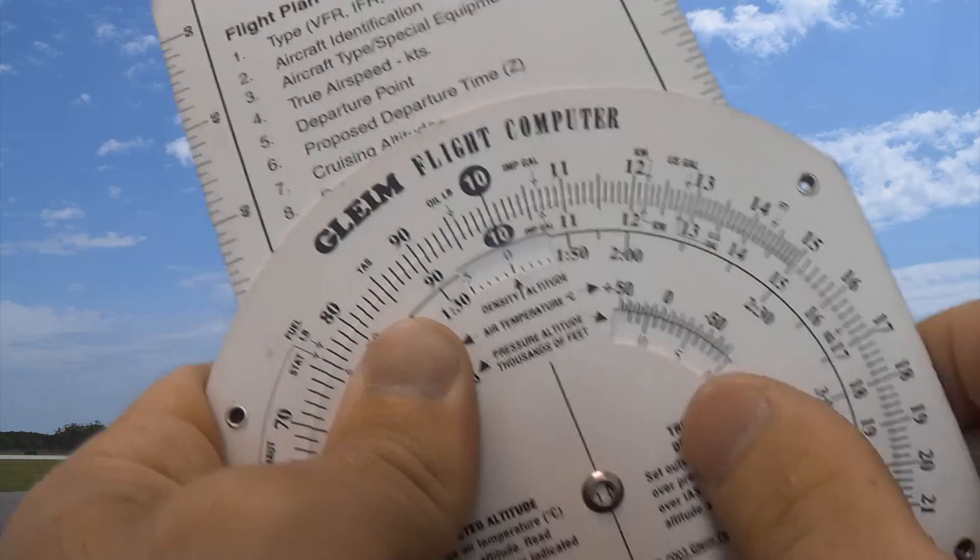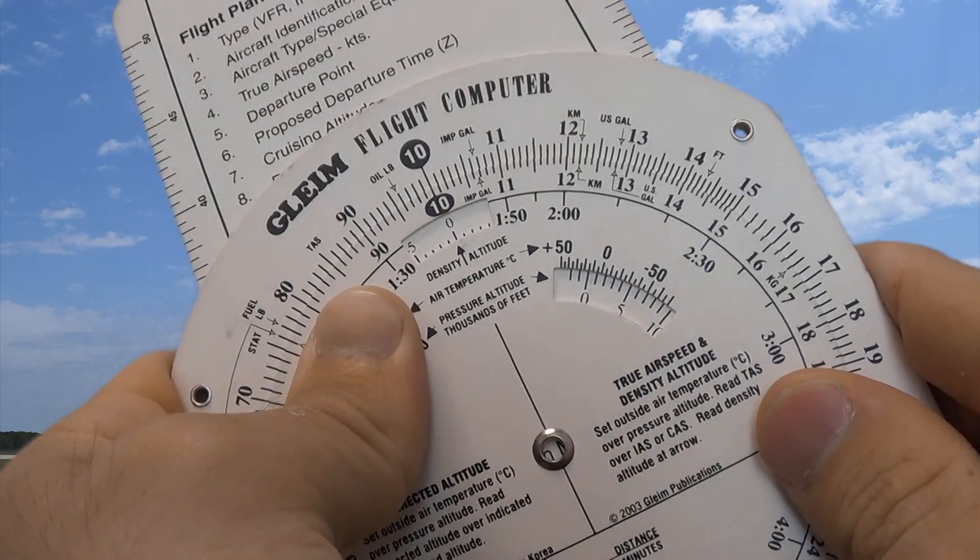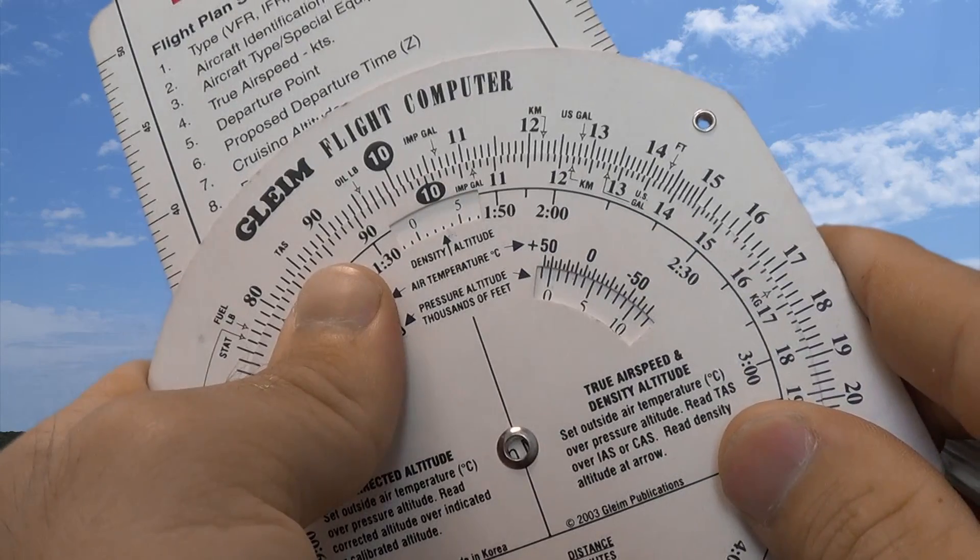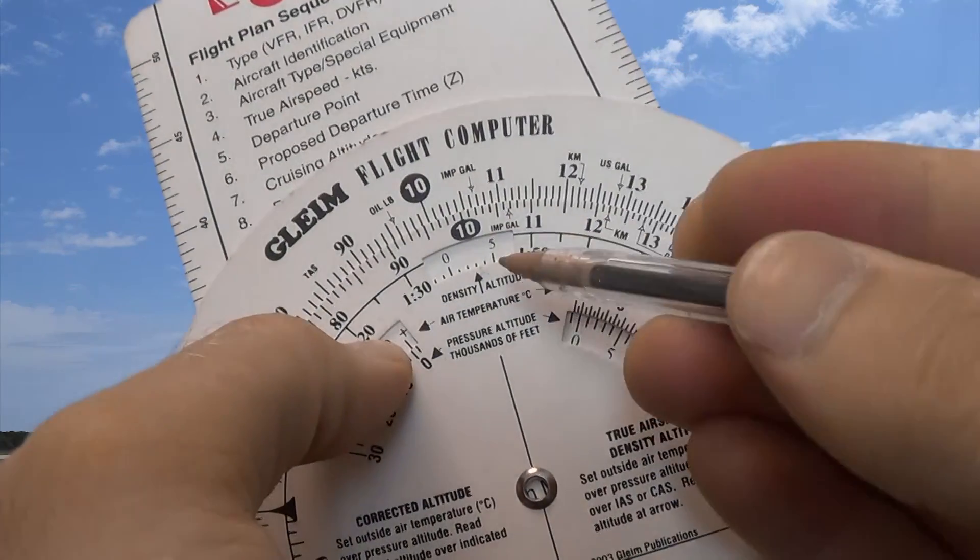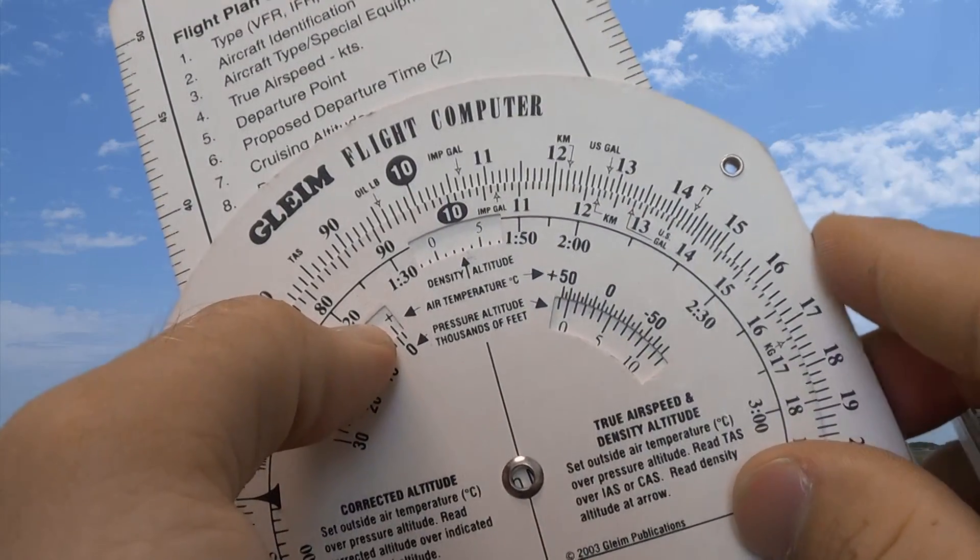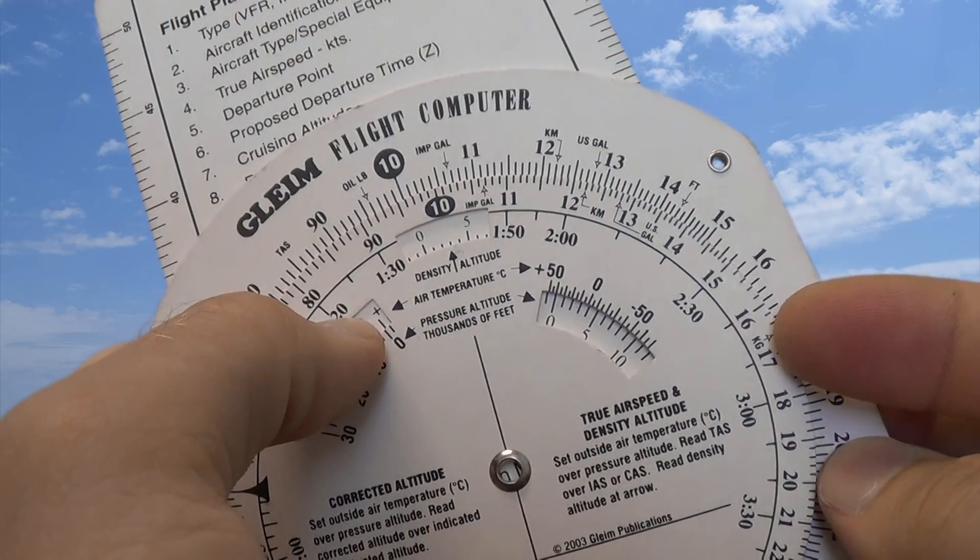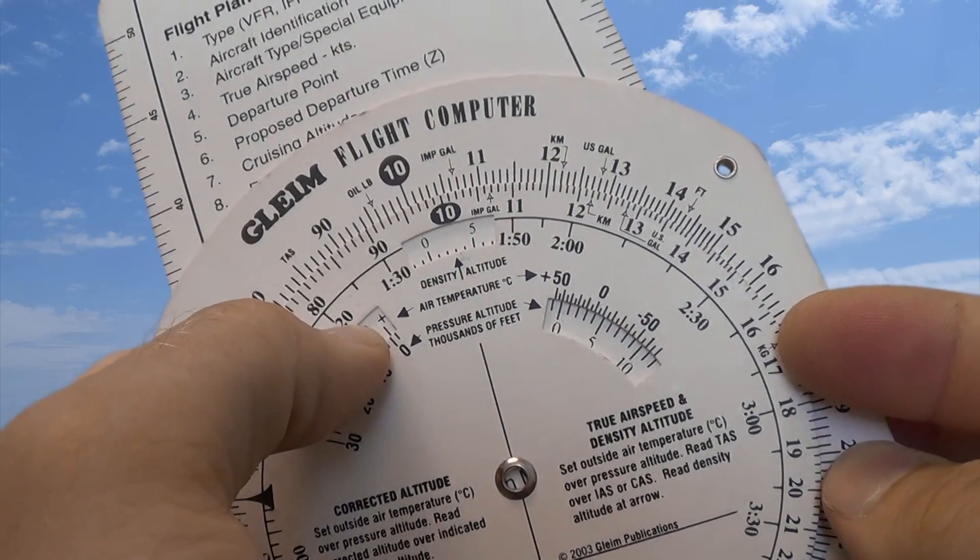But if we just go from 0 feet sea level with pressure altitude up to 40 degrees Celsius on a very warm day, we can see we climb up to 3,000 foot density altitude. So now we've got 3,000 feet density altitude, just that increase in temperature decreases the aircraft performance that much.